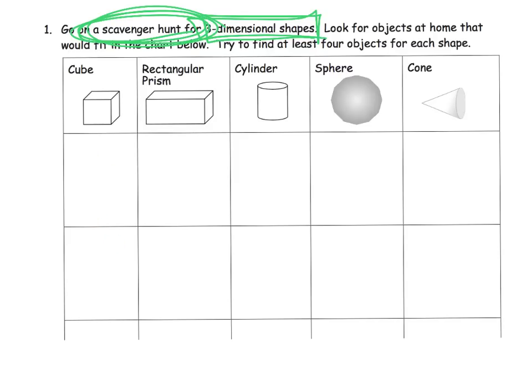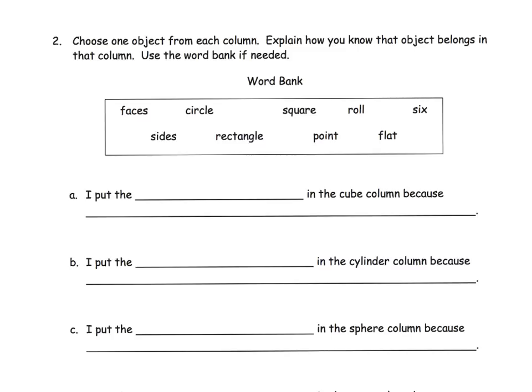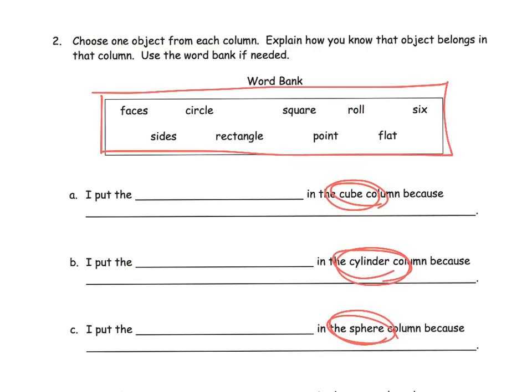But these are the figures that we want to really focus on at this point. What are some examples around the classroom or around the house that are cubes, prisms, cylinders, spheres, and cones? And then lastly, once you've identified those things, you've gone on your scavenger hunt, let's talk about them. Let's use vocabulary and practice using our vocabulary to talk about what makes a figure a cube or what makes that figure a cylinder or a sphere. And of course, here are some words that your students can use to describe their figures that they found in their scavenger hunt.